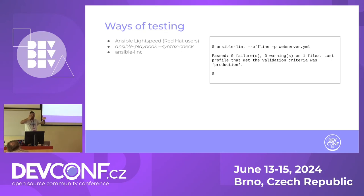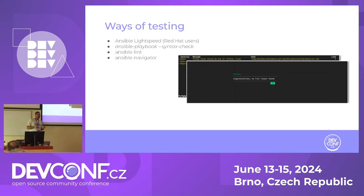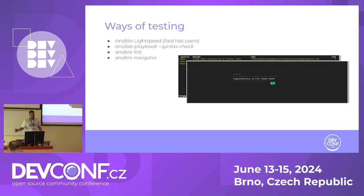Another option is Ansible Lint, which is almost the same as syntax check - it only checks the structure of your playbook. You could also use Ansible Navigator, which embeds both syntax check and Ansible Lint. So all of these check syntax and idempotency, but they won't tell you if your playbook used in production will give you the results you're expecting.